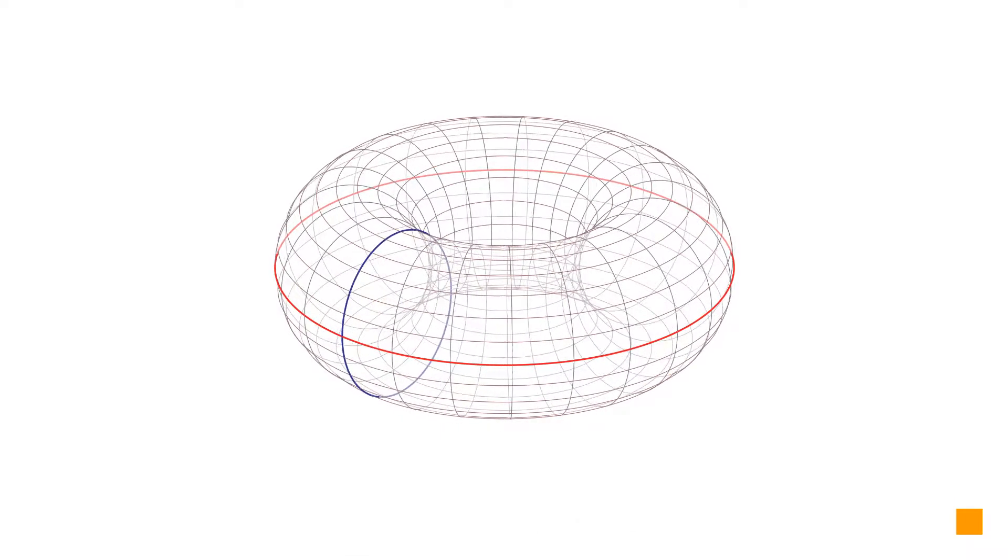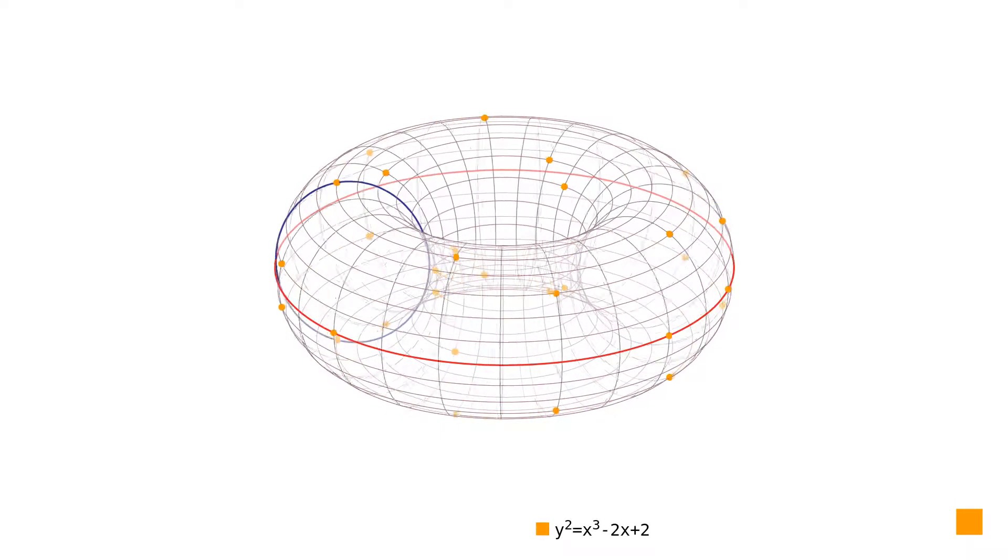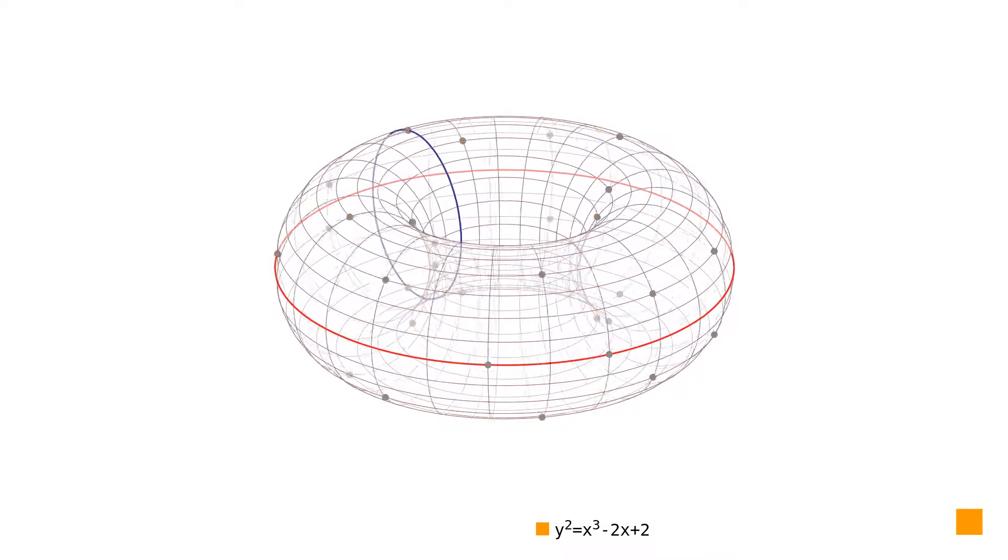On elliptic curve over a finite field, the multiplication of a point by a scalar value works the same way as over real numbers.